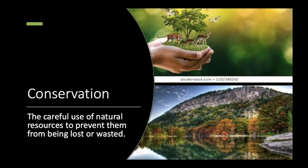Next word is conservation, which is the careful use of natural resources to prevent them from being lost or wasted. This applies to oil, since it's a non-renewable resource — something that can't be made in a factory — so you need to be careful about how much you're using because eventually it may run out. That's going to do it for the unit vocabulary. Hopefully you enjoyed it, got something out of it — stay on top of your schoolwork, and we'll see you in the next one.